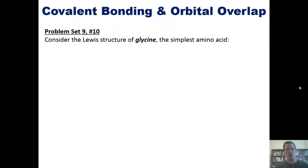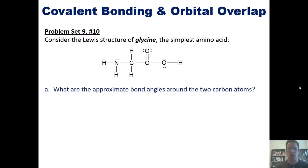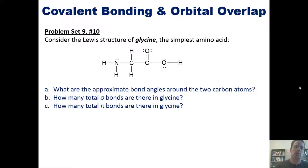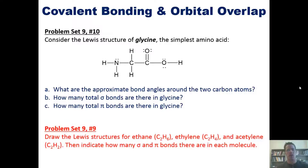That takes us to a gorgeous problem. Consider the Lewis structure of glycine, the simplest amino acid. What are the approximate bond angles around the two carbon atoms? How many total sigma bonds are there in glycine, and how many total pi bonds? I invite you to try this on your own — I'll post a link to a separate video where I answer it. Separately, draw the Lewis structures for ethane, ethylene, and acetylene and indicate how many sigma and pi bonds are in each molecule.